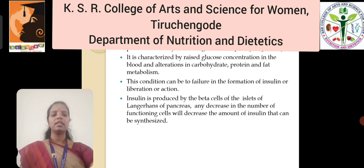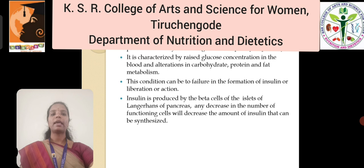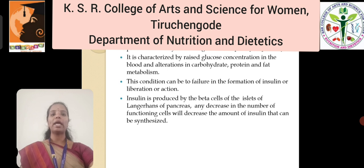Diabetes mellitus is commonly referred to as sugar. It is not a disease, it is a disorder. Diabetes mellitus is a chronic metabolic disorder that prevents the body from utilizing glucose completely or partially. It is characterized by raised glucose concentration in the blood and alteration in the metabolism of carbohydrate, protein and fat. This condition can be due to failure in the formation, liberation or action of insulin.